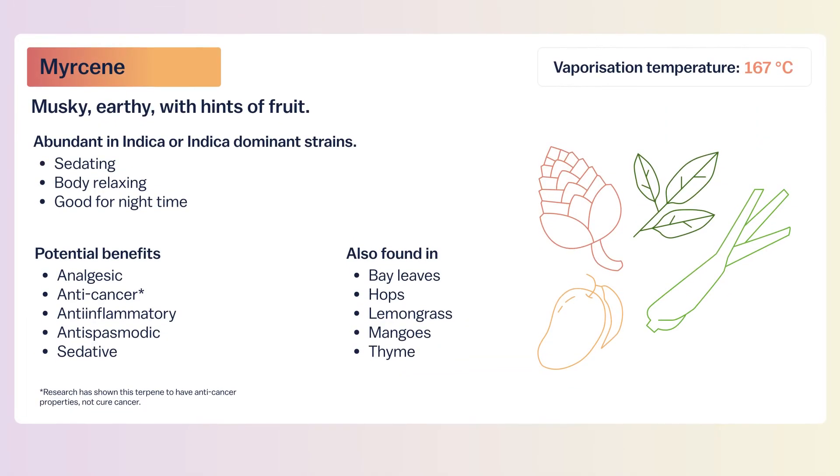Looking at terpene profiles on cannabis products is challenging because terpenes interact with each other to produce effects we probably don't even have the capacity to fully measure — a job perhaps more suited to artificial intelligence. However, looking at a terpene profile still gives a much clearer idea of what a product will do. Strains high in myrcene tend toward more classic indica chemovars — more sedating, better for nausea, pain, muscle relaxation, tremors, and sleep.